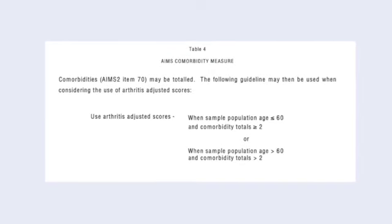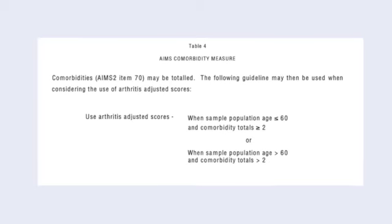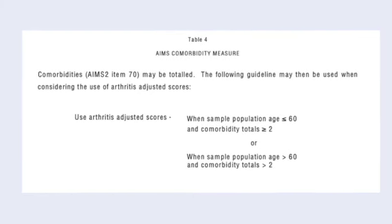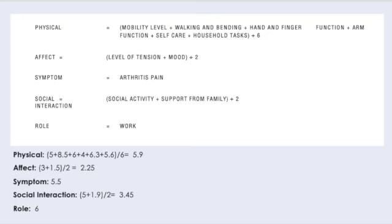Question 59 is designed to see if you need to do an adjusted score. Scale scores may be modified to adjust for the fact that health status problems in a particular area of function may be due to problems other than arthritis. Item 70 is a core morbidity measure; core morbidities in the AIMS-2 may be totaled through item 70. The slide shows how to get the physical subscale score, affect, symptom, social interaction, and role — you take the normalized scores for each one and add them up to get a score for each subscale, which should fall in the 0 to 10 range.